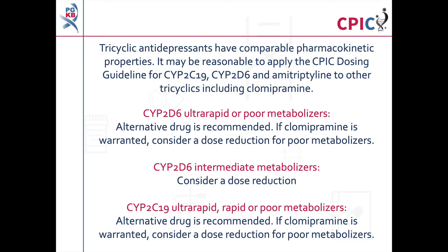The guideline recommends an alternative drug for patients who are CYP2D6 ultra-rapid or poor metabolisers, or patients who are CYP2C19 ultra-rapid, rapid, or poor metabolisers. If clomipramine is warranted, a dose reduction can be considered for patients who are CYP2D6 poor metabolisers or CYP2C19 poor metabolisers. A dose reduction can also be considered for patients who are CYP2D6 intermediate metabolisers.